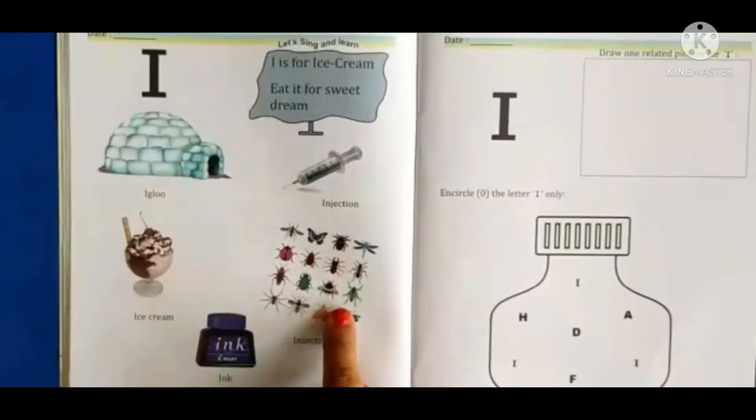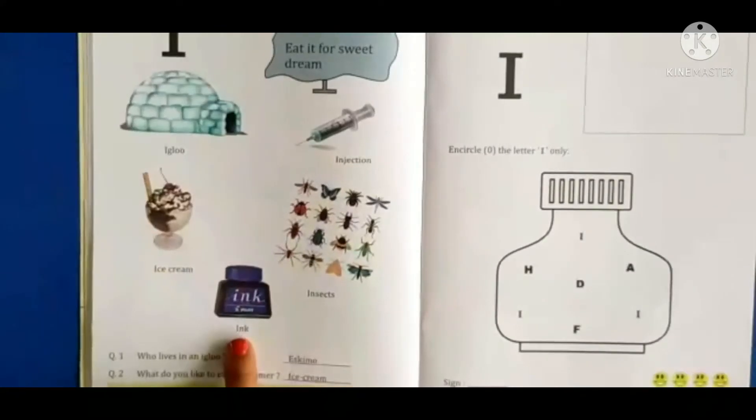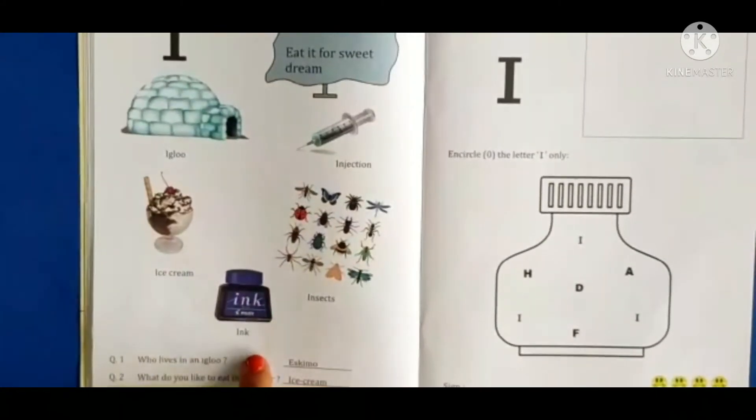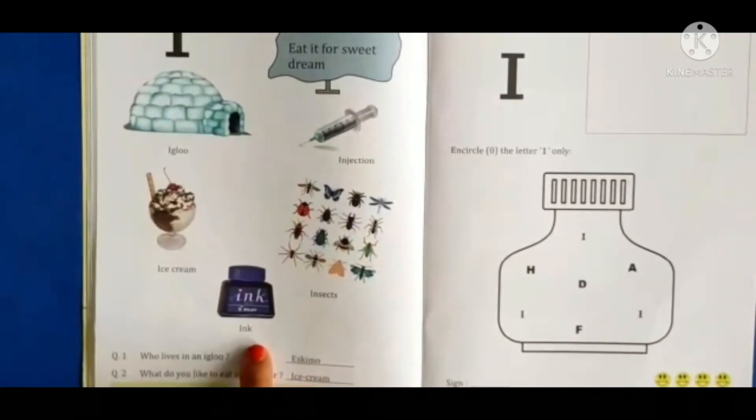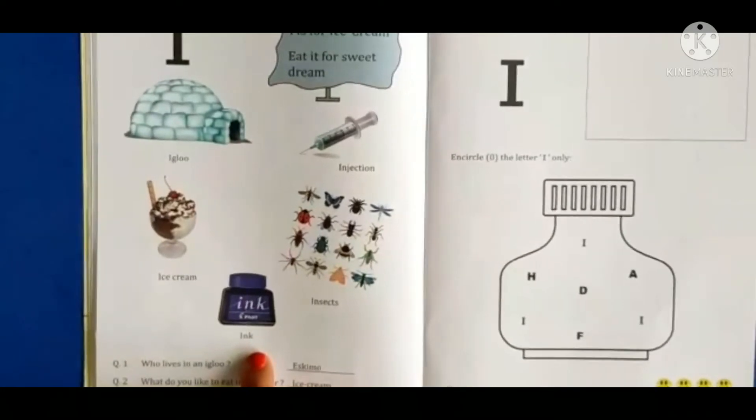I for insects. I for ink pot. This is ink pot. Ink pot is blue color.